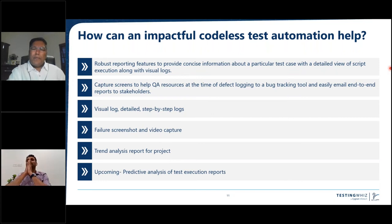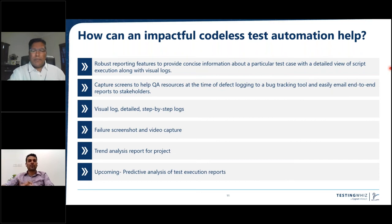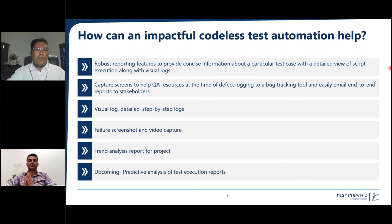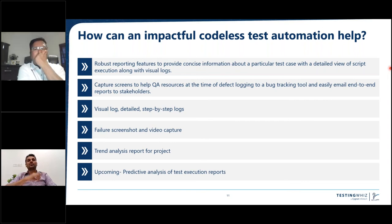That gives us a very good idea of solving a fundamental problem of testing. From all my learnings and experience in testing, I believe we could solve the problem of pesticide paradox with this particular AI/ML feature — predicting which modules are very much prone to error, finding more bugs in those particular modules.